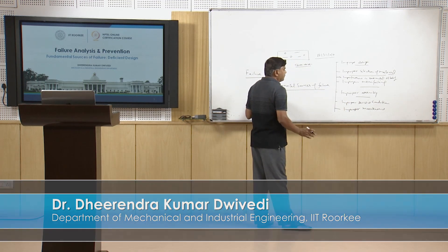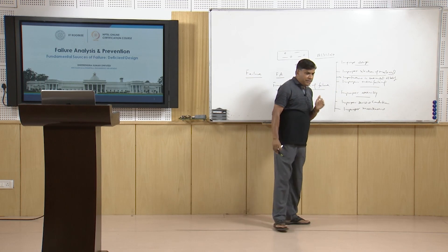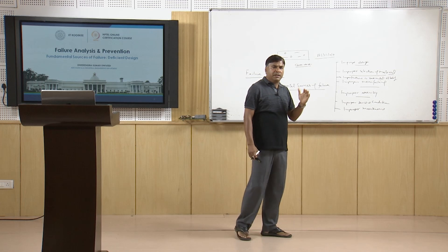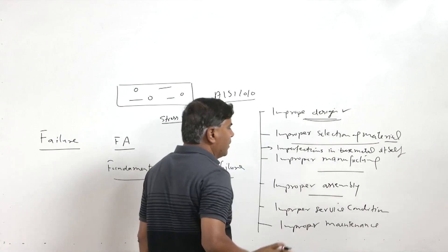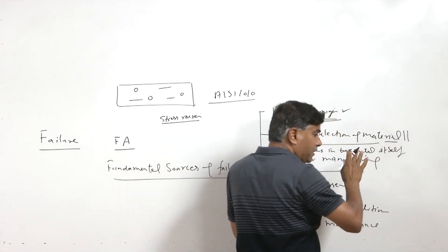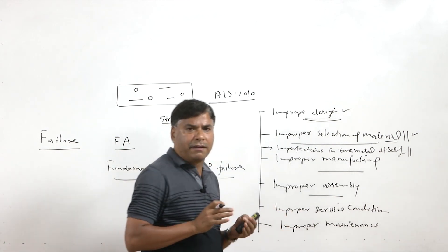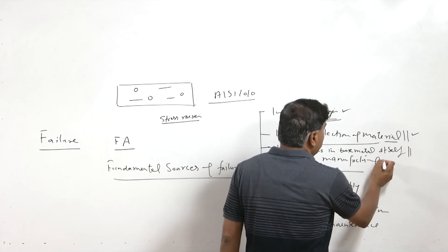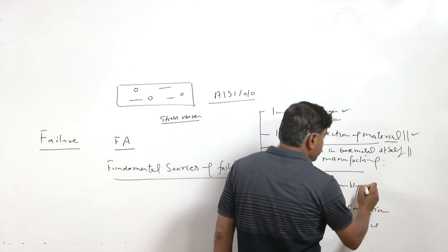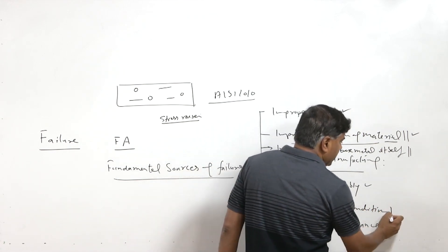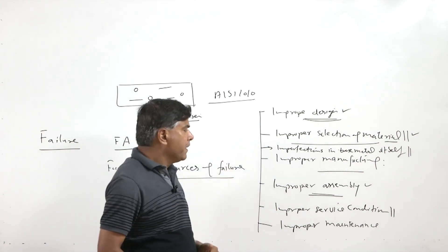These are the fundamental sources of failure of a mechanical component. Whenever any failure occurs, all these factors need to be investigated and the possibility for each one ruled out one by one. We will first investigate whether the design was adequate in light of service conditions, whether the correct material was actually used, and whether there are any deficiencies in the material itself such as pores, inclusions, or cracks. We also check whether the recommended manufacturing process was followed, whether assembly procedure was correctly followed, and whether the conditions under which failure occurred matched those for which the component was designed.